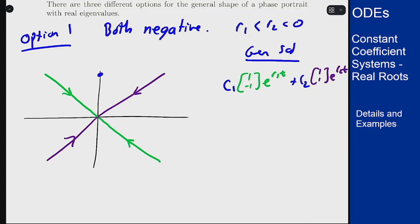If I were to start here, r1 is more negative than r2, which means that as t goes to infinity, e to the r1t goes to zero first because r1 is more negative, which means we're going to approach the origin along the r2 line or along the purple line.